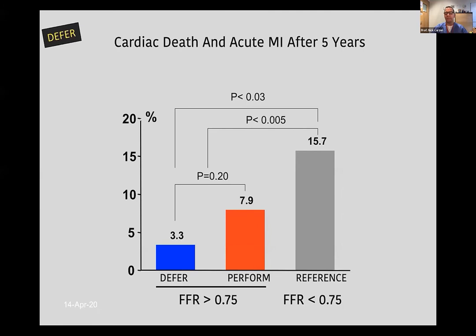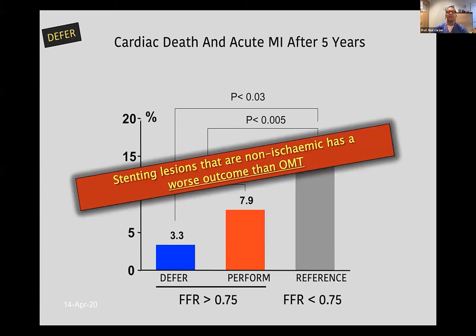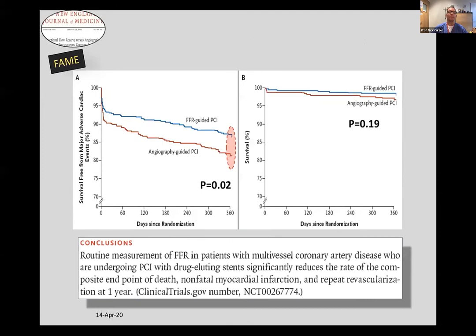This shows the five-year outcome of the DEFER trial, which randomized lesions that were not FFR-positive — however tight they appeared — to either receiving a stent or not. There was also a group with definitely ischemic lesions that did receive a stent. At five years, the chances of dying or having a spontaneous MI were highest in the ischemic-lesion group even when stented, but lowest in the group whose lesions — however tight — didn't get a stent. The broad message: stenting non-ischemic lesions has a worse outcome than optimal medical therapy alone.